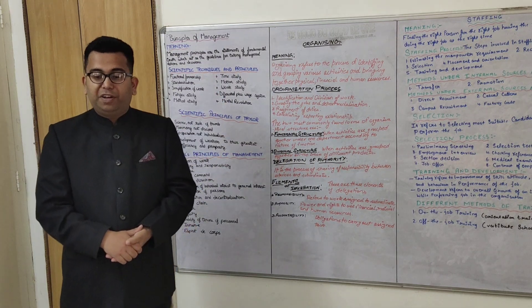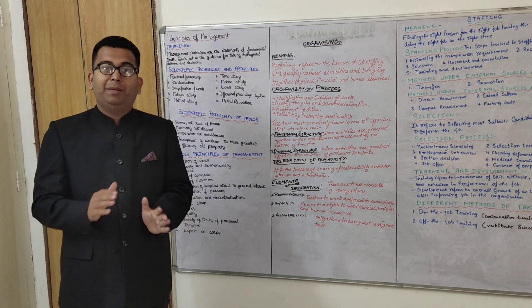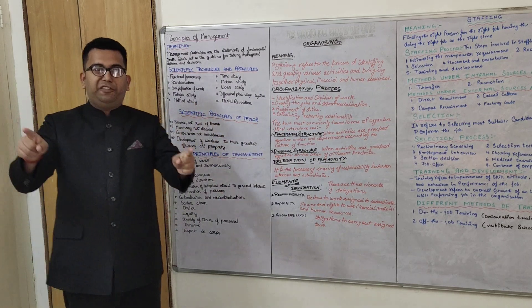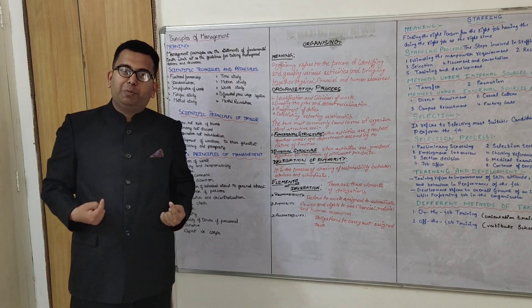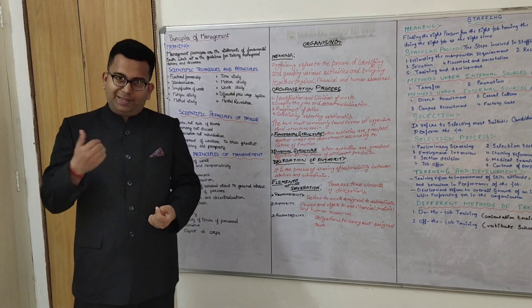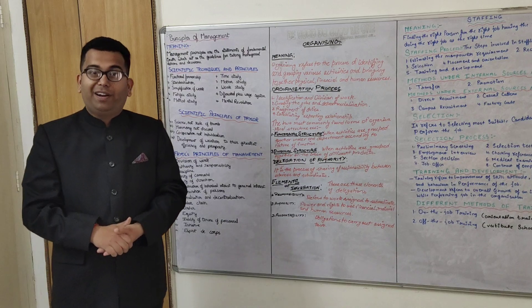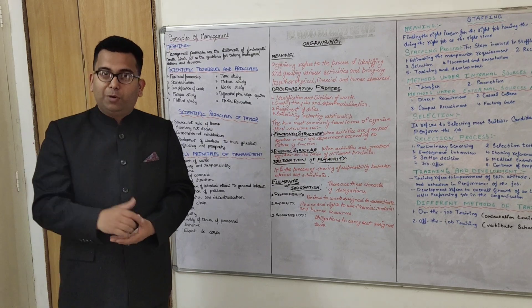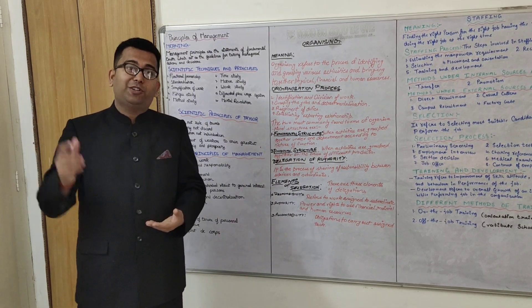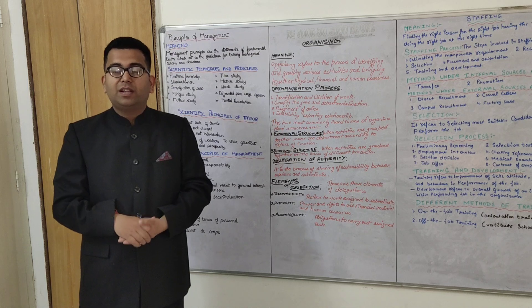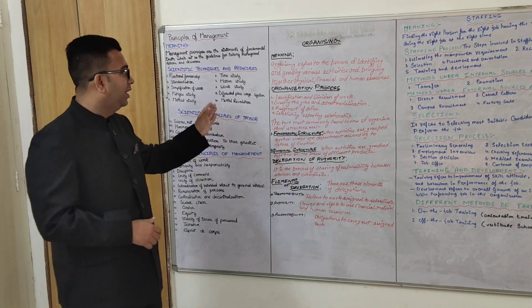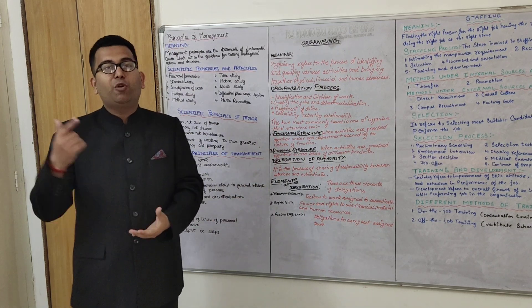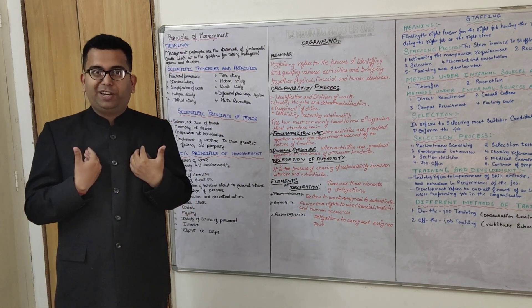Work study is doing the best work in the right manner in the best possible way. Differential piece rate system says: if you are efficient and given a target of 100 but produce 120, you are an efficient worker and should be paid more. If you are not efficient, you should receive less. So wages are distributed on the basis of efficiency — efficient workers are paid more, non-efficient workers are paid less.